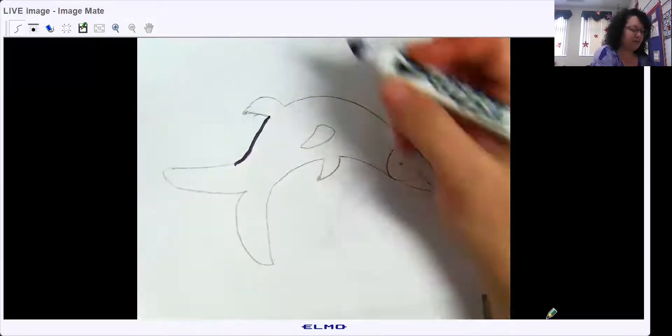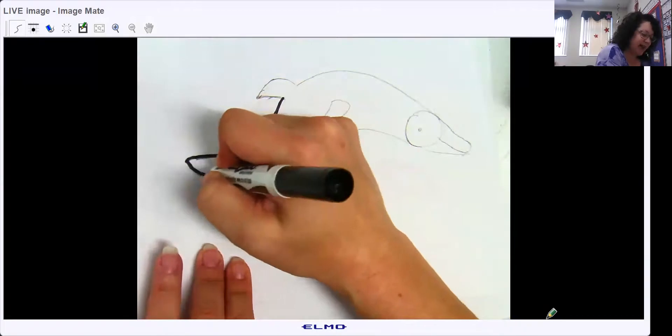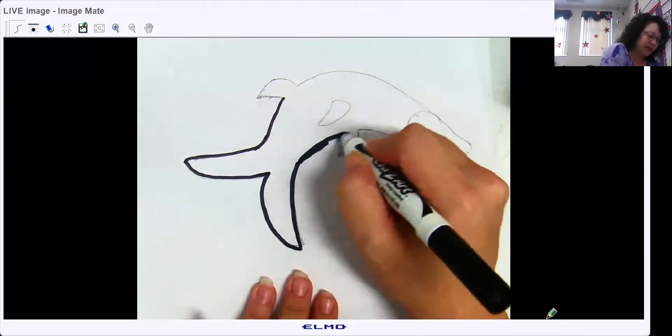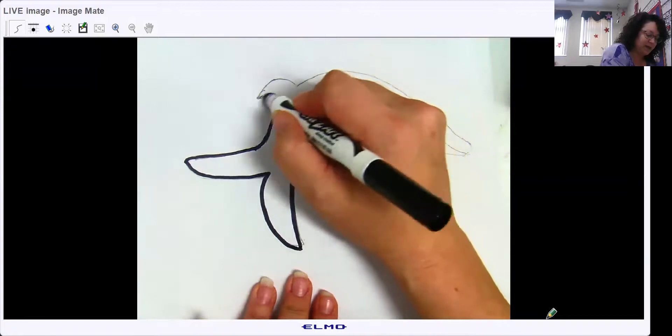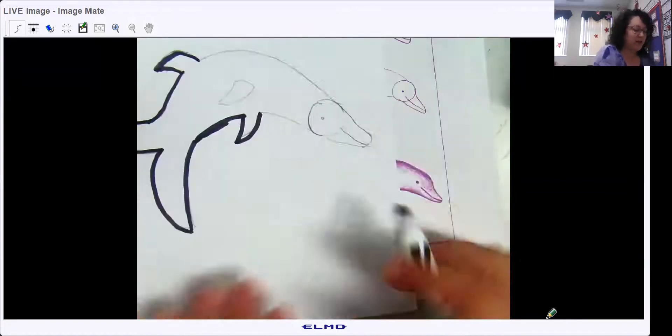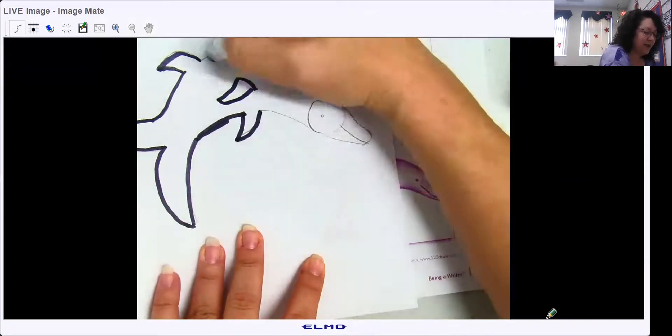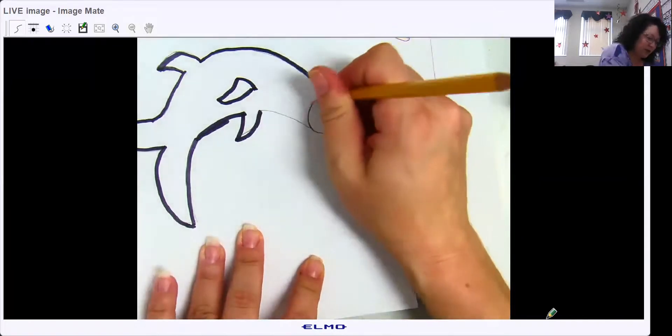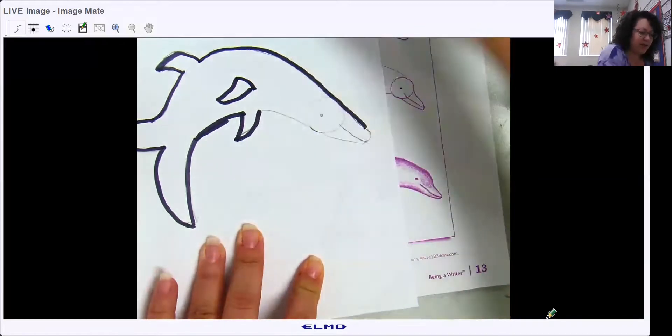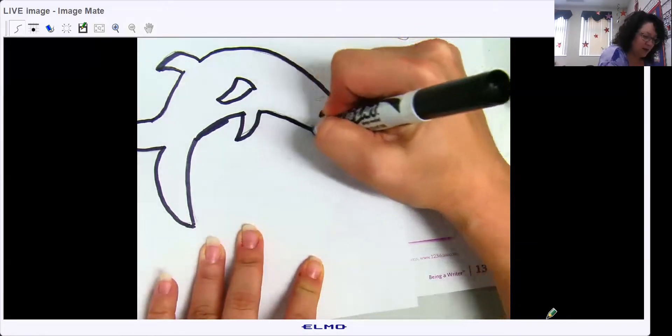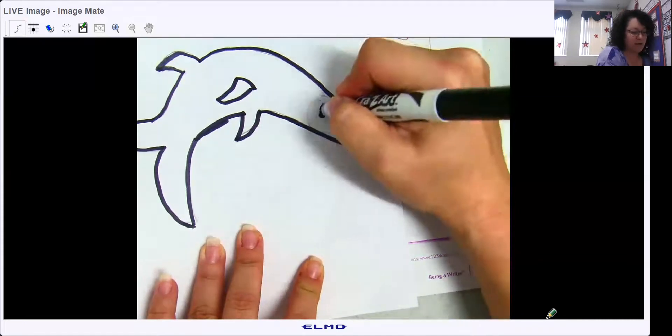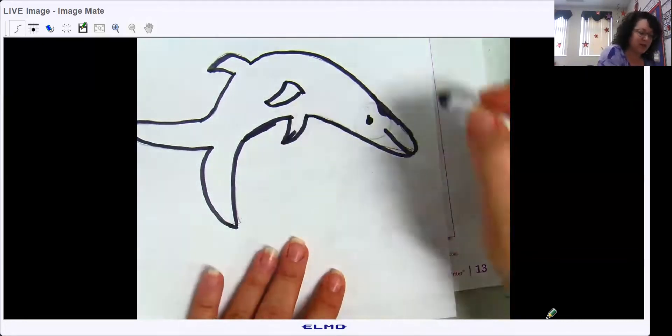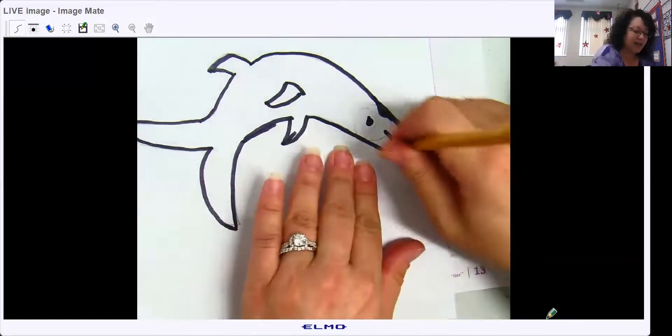All right so that was our lesson today on functional text. This author has given us step-by-step instructions on how to draw a dolphin. So hopefully you have done that and you now have the option of coloring your dolphin. I think that looks a little bit better. Not much, this is not my best work. That was our lesson on functional text.